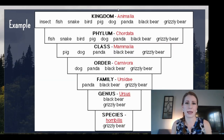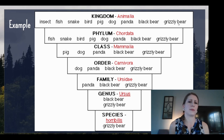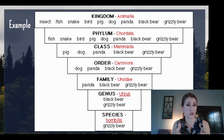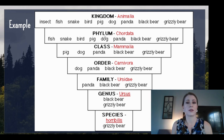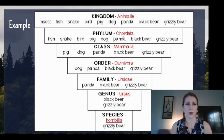Here's an example. In the kingdom Animalia — the animal kingdom — we could have black bears, grizzly bears, birds, snakes, fish, insects. They're all animals. As you go down in those levels of organization or taxa, you're going to get more specific. This phylum here is Chordata, meaning any animal that has a spinal cord or nerve cord — so fish, snake, bird, pig, dog, panda, black bear, grizzly bear. Insects are not in the phylum Chordata.